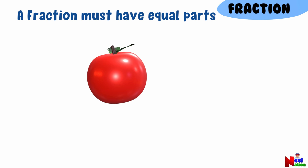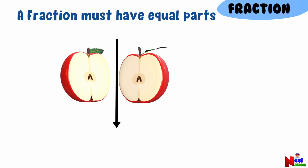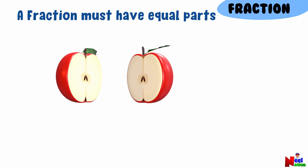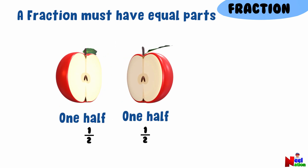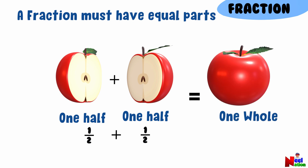Here, we have one apple. Let's cut this apple into two pieces right down in the middle. Now, there are two equal parts. Each part is a fraction called one half. In other words, one half plus one half makes one whole.